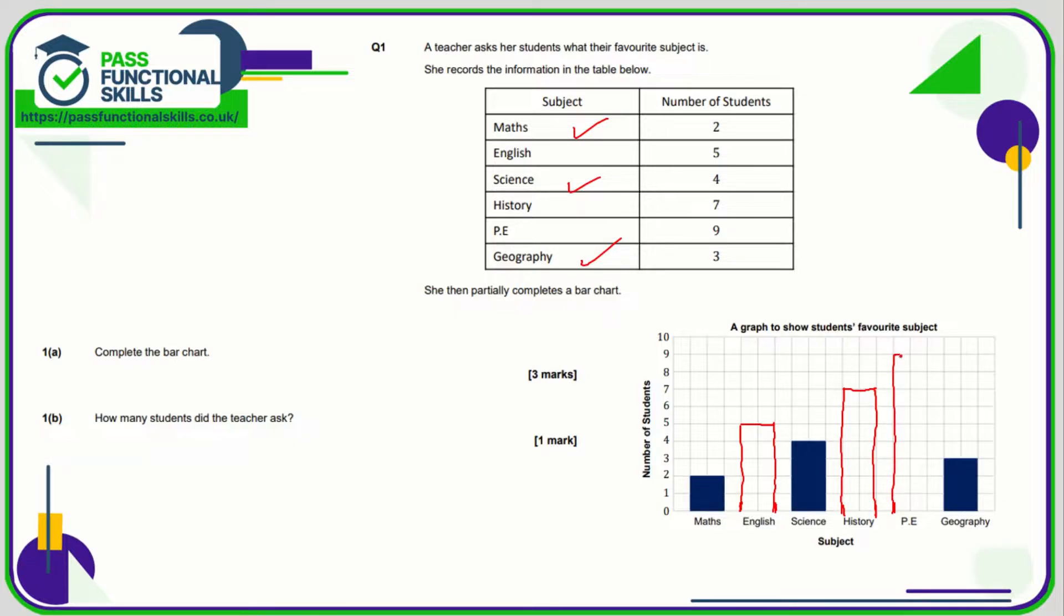So there we go, we have completed the bar chart. So how many students did the teacher ask? Well, it's just going to be 2 plus 5 plus 4 plus 7 plus 9 plus 3. You can use a calculator, so 30.